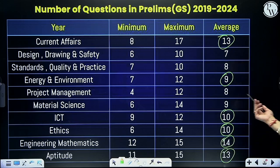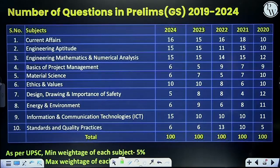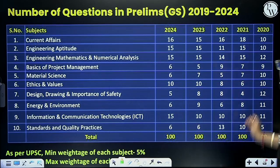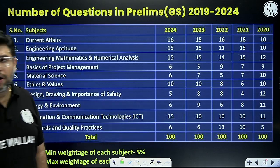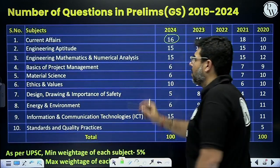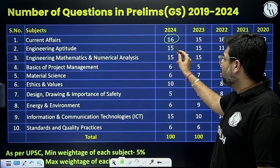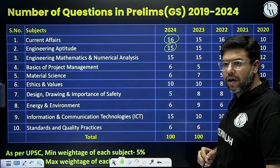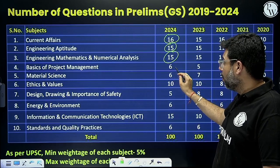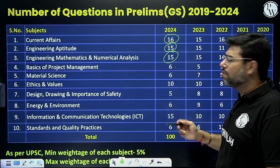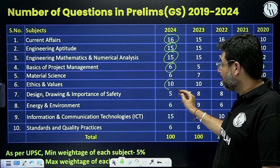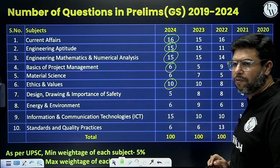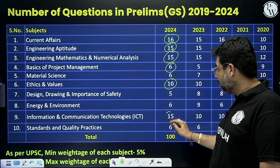Looking at the weightage year-wise for 2020, 2021, 2022, and 2023: current affairs carried very high weightage last year. Engineering aptitude and engineering maths are very important. Project management is a very important topic for civil engineers. Material science, ethics — which is very easy to prepare — and ICT are also significant, with 15 questions (15 marks) asked from ICT alone.